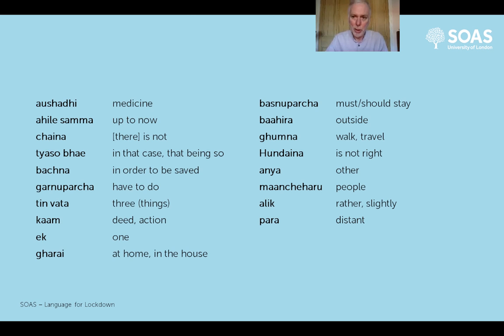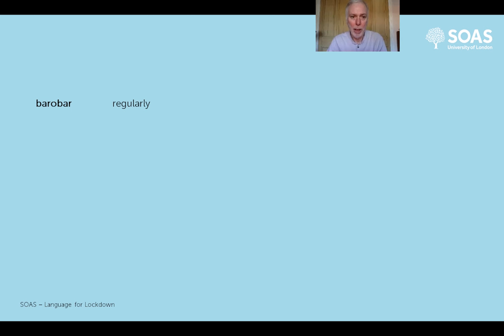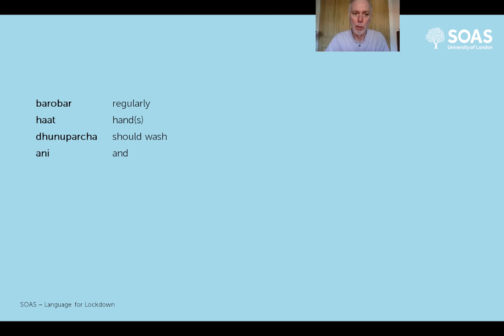'Para' is an adjective meaning 'distant', 'far away'. 'Rahnu parasha' - again 'have to' or 'should' - 'rahnu' means 'remain', 'stay', 'not go somewhere else'. So we've now had the numbers: 'ek' (one), 'dui' (two), 'tin' (three). 'Barobar' is an adverb meaning 'regularly'. 'Hat' means 'the hand' or 'hands'. 'Dhunu parasha' means 'you should wash' - 'dhunu' means 'to wash' and 'parasha' means 'you have to' or 'you should'. 'Ani' is another word for 'and', more to do with 'subsequently, after that' or 'additionally'. 'Ra' is the other word for 'and', more regularly used in lists of things.